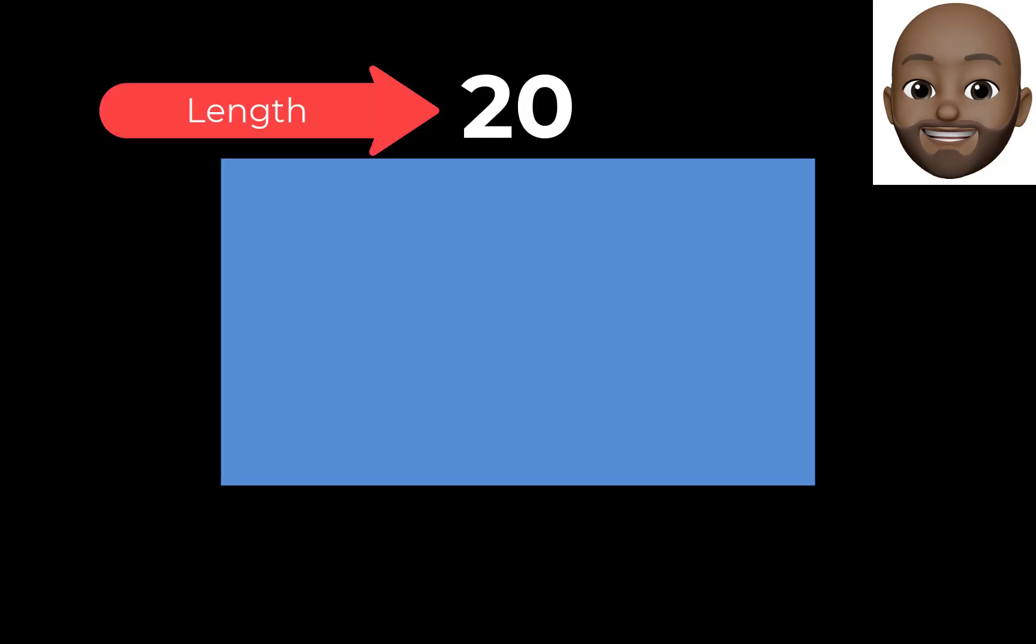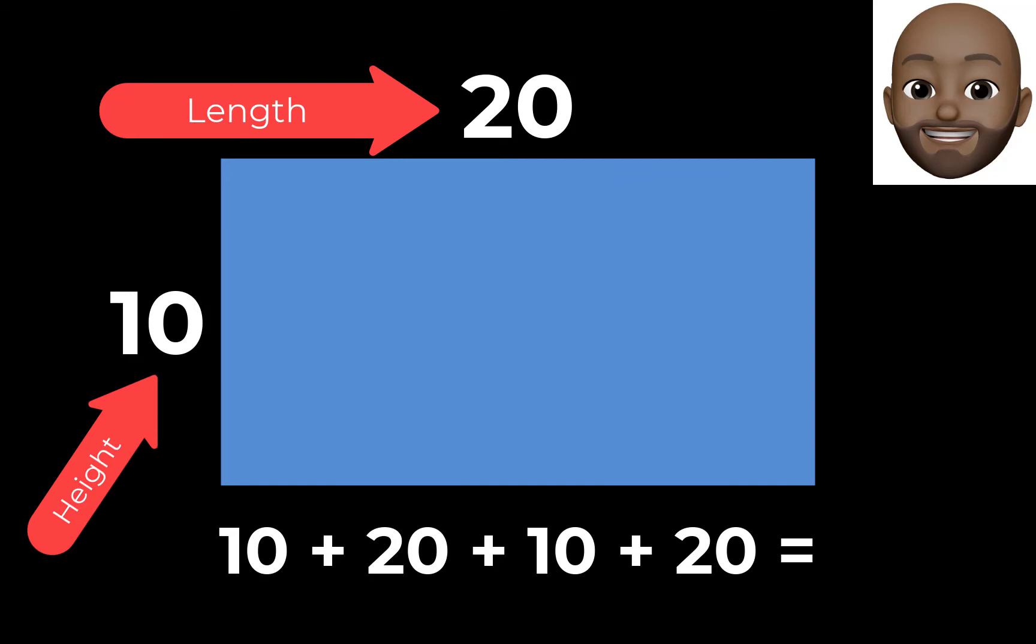Final example, this rectangle has a length of 20 and a height of 10. To find the perimeter, simply add all the sides and the answer will be 60.